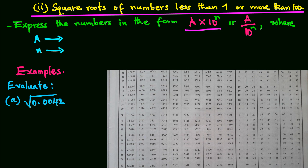or A over 10 power n, where A is a number between 1 and 100, and n is an even number. There is a reason why n must be even, and we're going to see that from our examples.